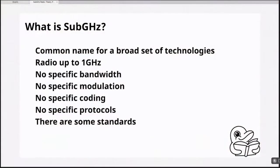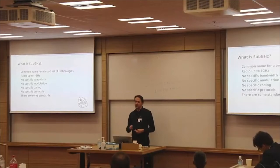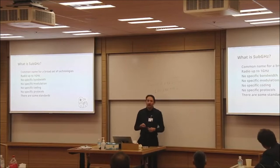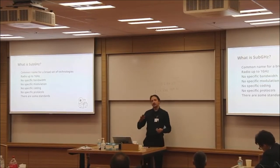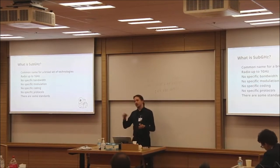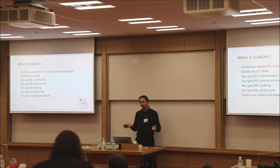Normally, this classification actually continues. It's like: first one is Sub-Gigahertz, then you have Sub-3 Gigahertz, and then you have Sub-6 Gigahertz. Next time you hear something like Sub-3 Gigahertz radio, most likely it's something in the 2.4 GHz range — maybe Wi-Fi, Bluetooth, or some other technologies. And Sub-6 Gigahertz covers next-generation Wi-Fi and mobile networking. There's no specific bandwidth or modulation defined by these protocols.